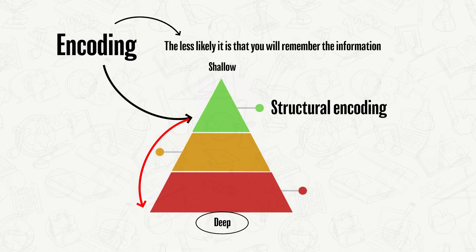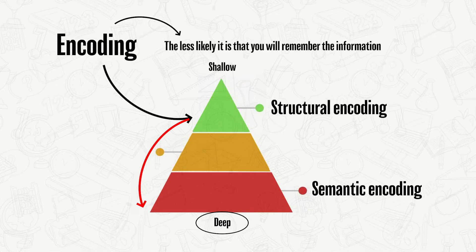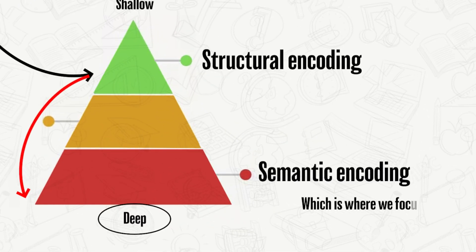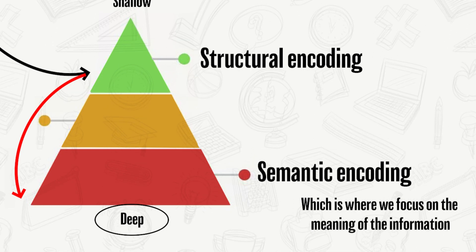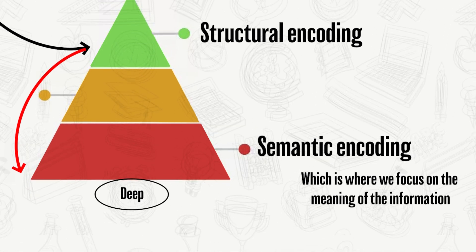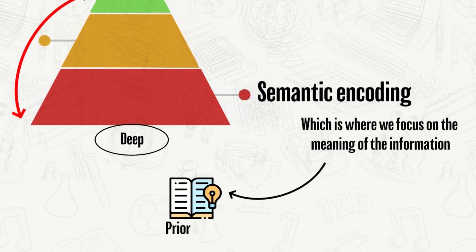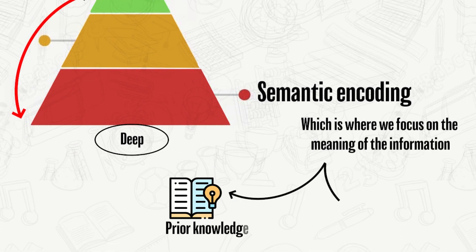The deepest level of encoding is semantic encoding, which is where we focus on the meaning of the information, along with making connections to prior knowledge, experiences, or other examples that we already have. This makes the information more likely to stay in long-term memory.